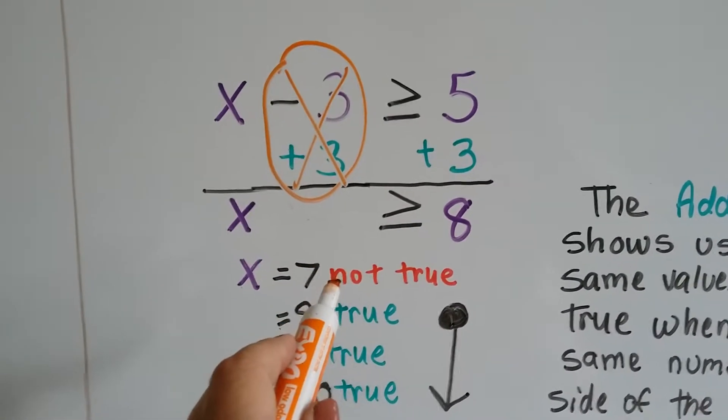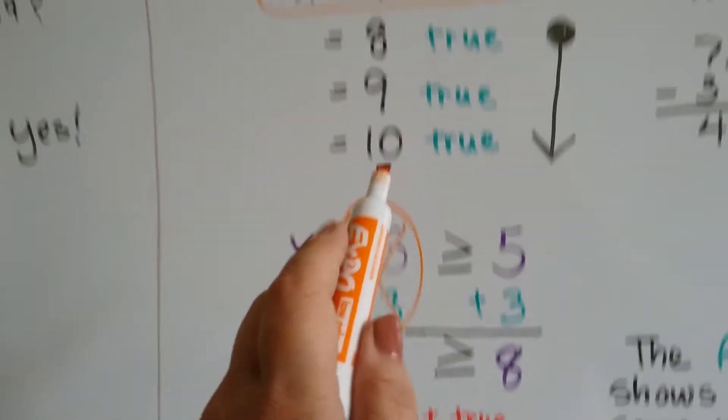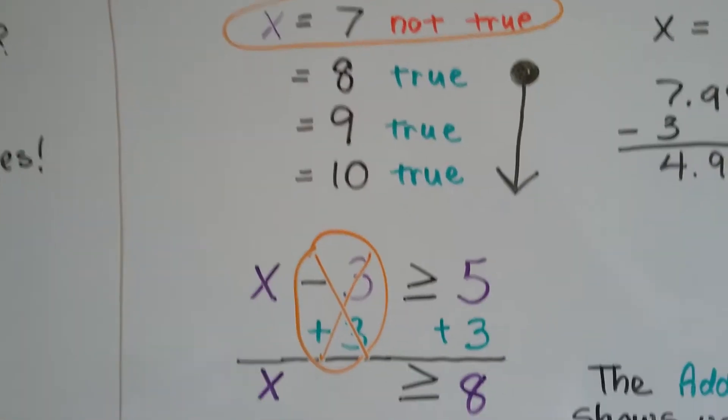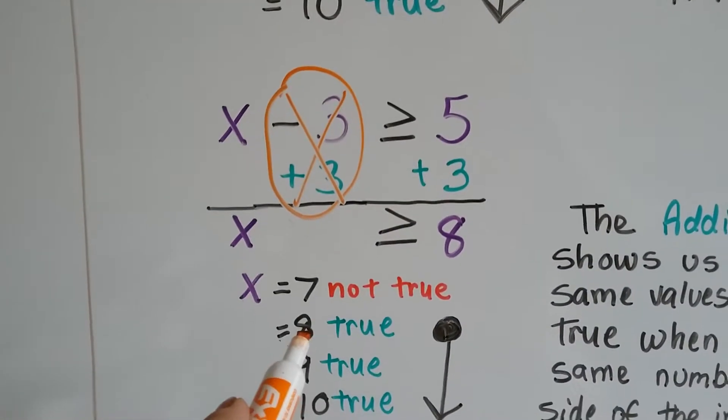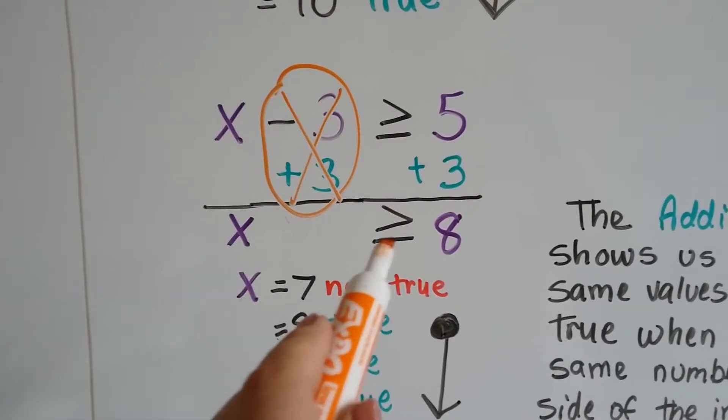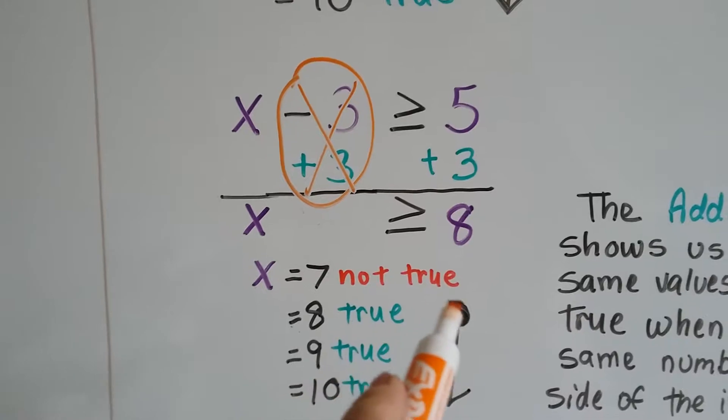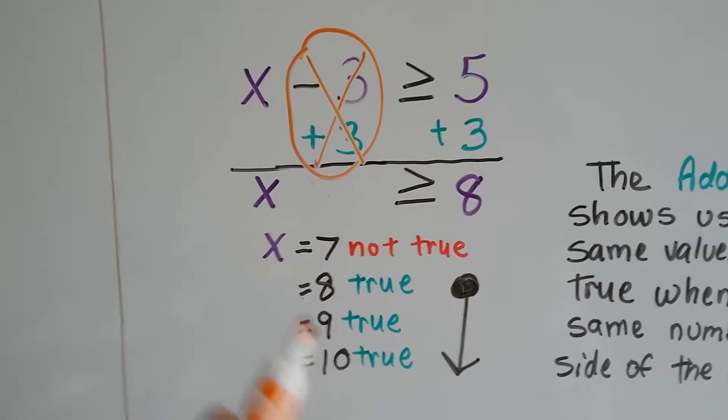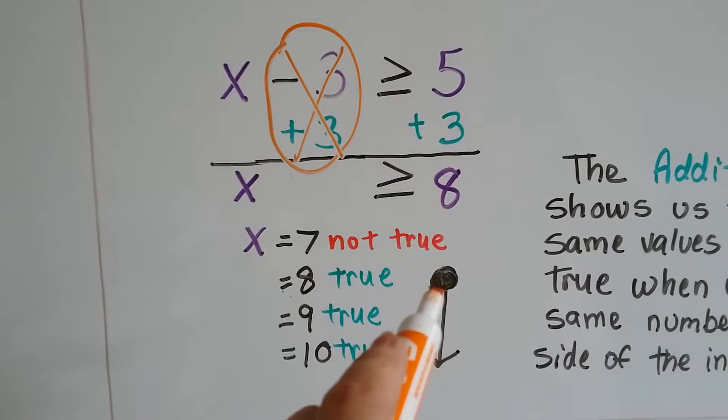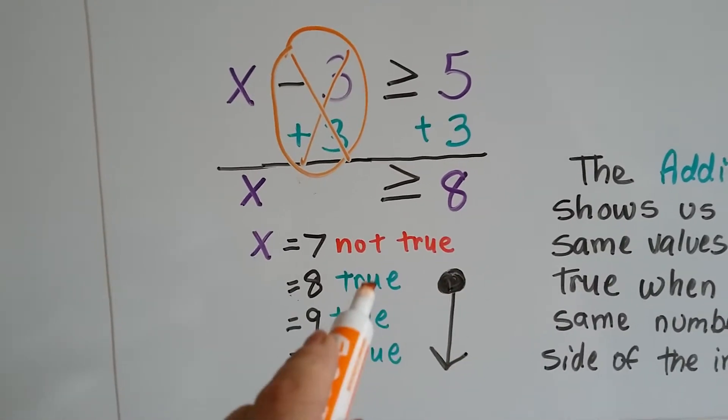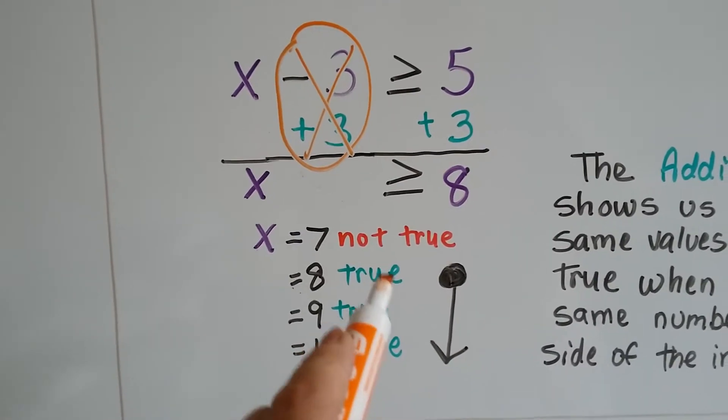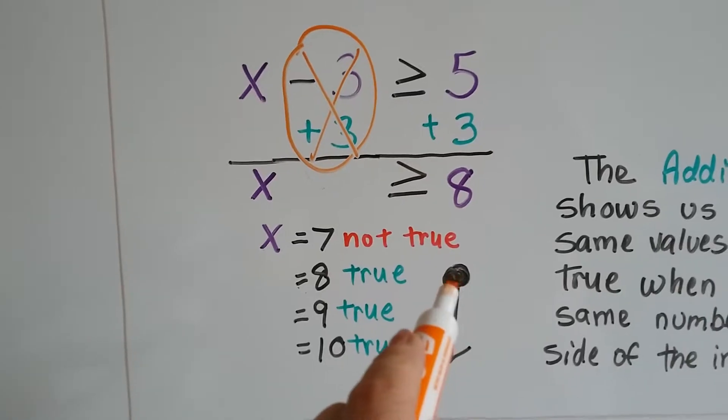So could 7 make it true? Nope. Just like up here, it's still not true. Could 8 make it true? Is 8 greater than or equal to 8? Yes, it's equal to it. So that's true. So we put our black dot, and 9 is true and 10 is true because they're all greater than 8. And so we have a black dot with our arrow showing that all the numbers bigger are included, and it's filled in showing 8 is included.